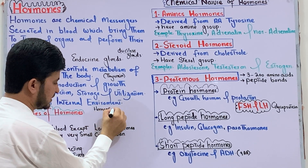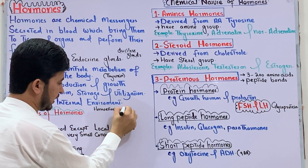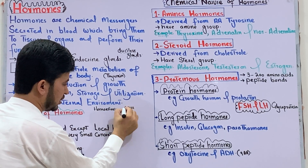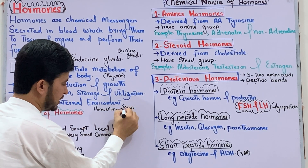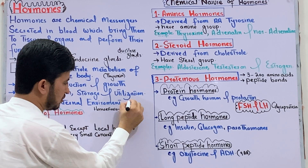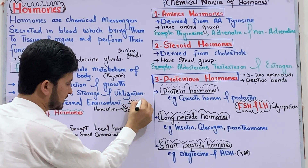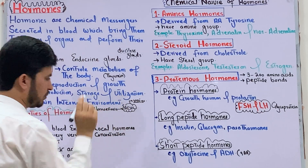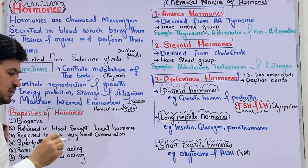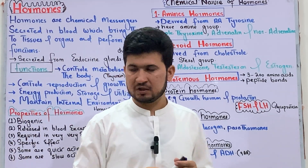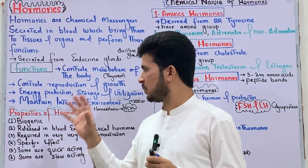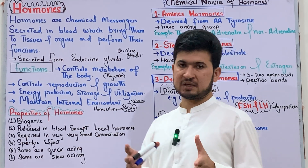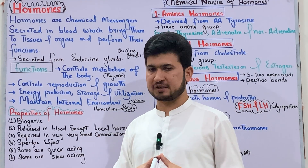For example, ADH — anti-diuretic hormone — maintains the amount of water in the body. ADH plays a key role in homeostasis. These are the common functions of hormones; each individual hormone will be discussed in detail later.